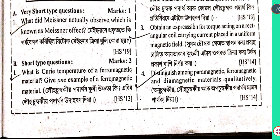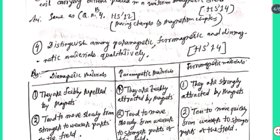Question number 4: Distinguish among paramagnetic, ferromagnetic, and diamagnetic materials qualitatively. We distinguish between diamagnetic materials, paramagnetic materials, and ferromagnetic materials.